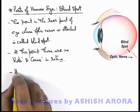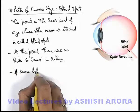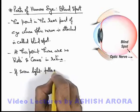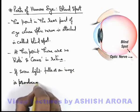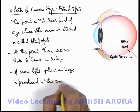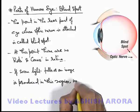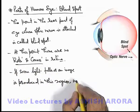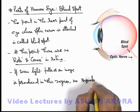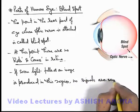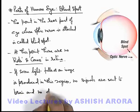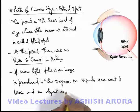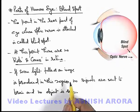If some light falls or an image is produced in this region, as no cells are present, no signal is sent to the brain and no object is seen. Even if the image is produced in the region of the blind spot, the image will not be visible to the human eye — so in this region it cannot be seen.